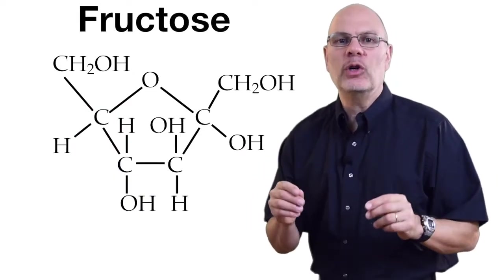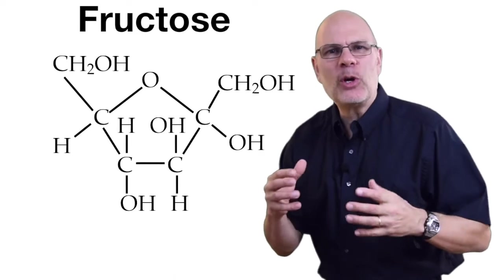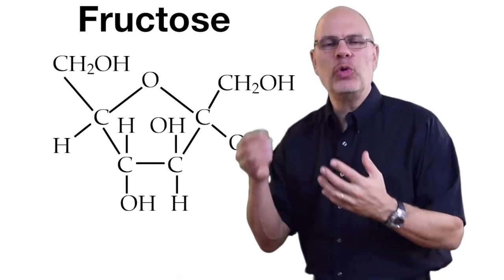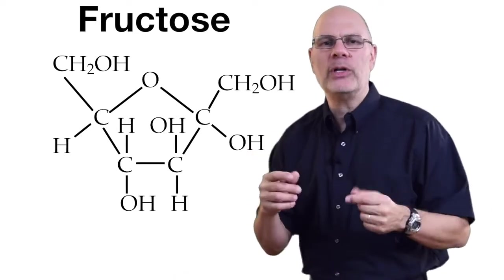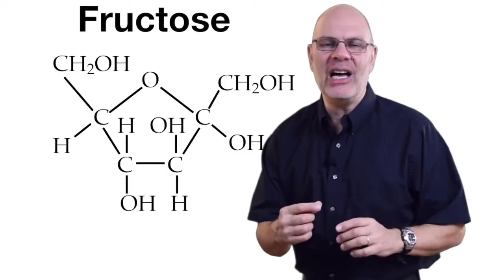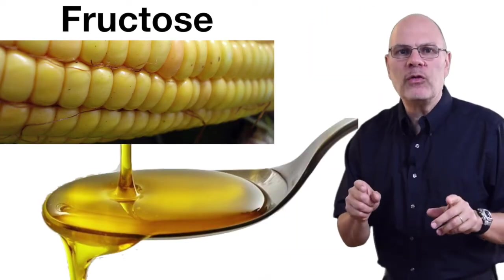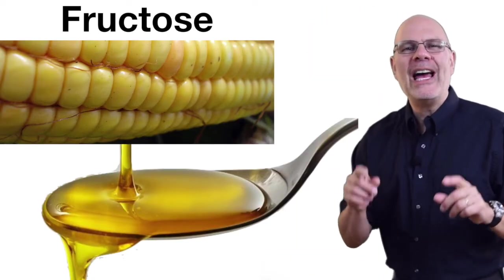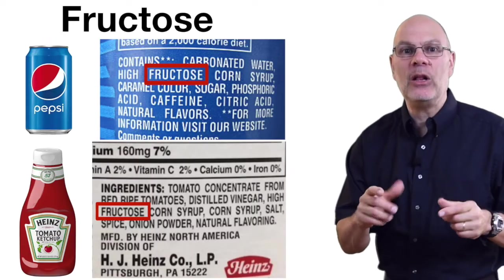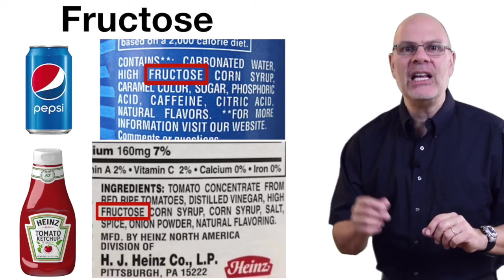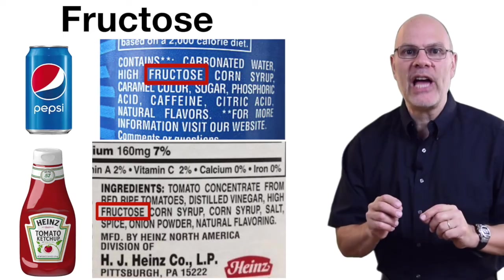That's an important adaptation for plant dispersal. We humans love fructose and other sugars. That's because our distant ancestors were tree-living primates who ate fruit and passed that preference on to us. Today, most of our fructose comes from corn, and up to 10% of the calories in a North American's diet can come from this monosaccharide.